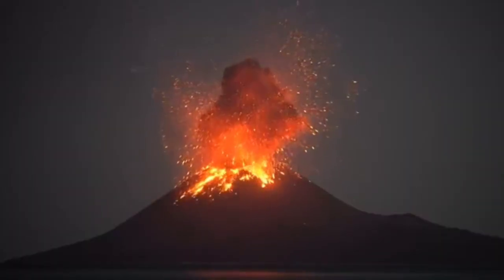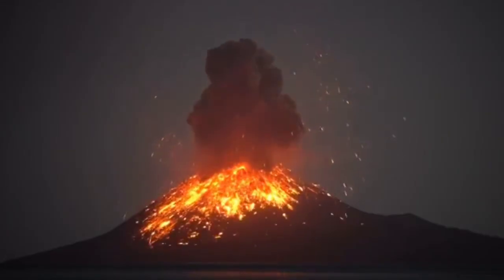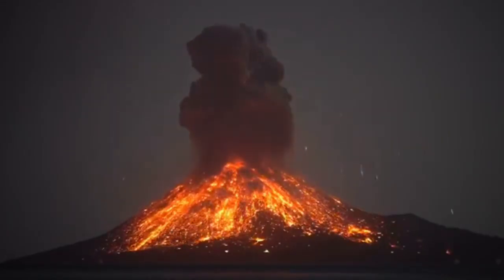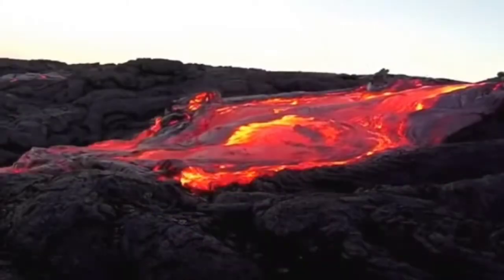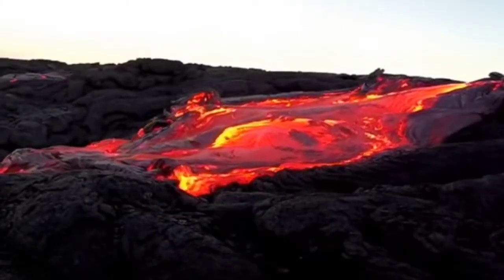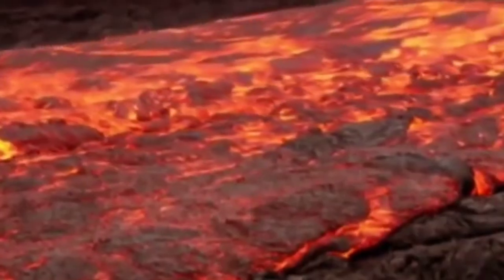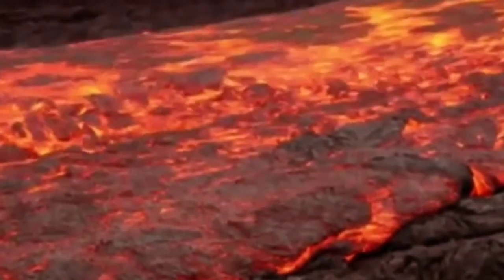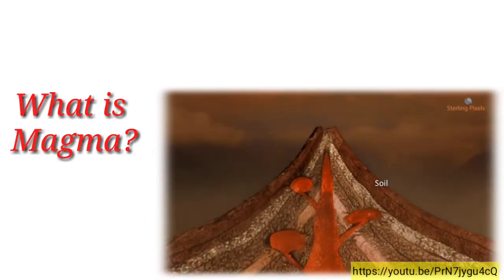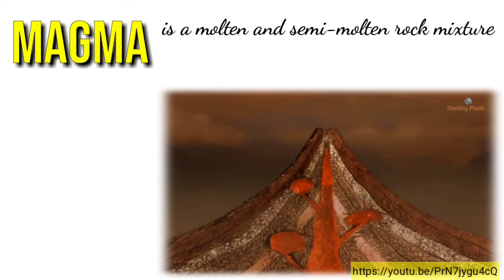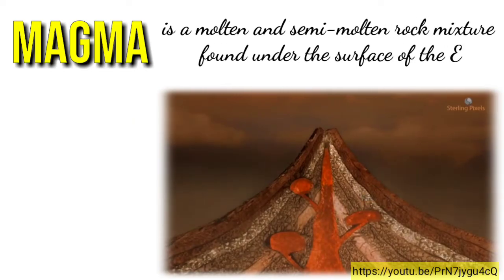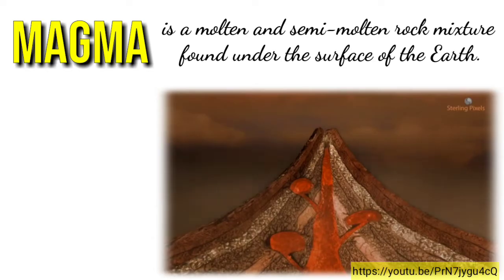Volcanic activity is one of the most powerful forces in nature. Volcanoes vary in shapes, sizes, and eruption types. Violent eruptions occur when pyroclastic material — a mixture of magma, rocks, ash, and hot gases — is exploded upward by pressure caused by underground gases and magma. Now, what is magma? Magma is a molten and semi-molten rock mixture found under the surface of the Earth. When magma is ejected by a volcano or other vent, the material is called lava.